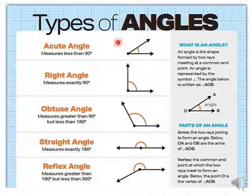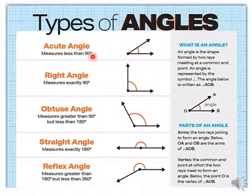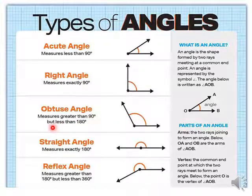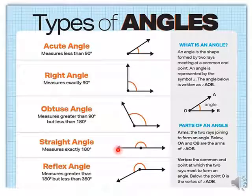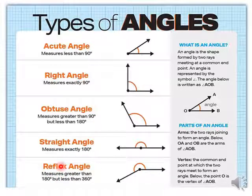The types of angles: we have acute angles, which are smaller than 90 degrees. If it's a right angle, its measure is exactly 90 degrees. If it's greater than 90 and less than 180, it's an obtuse angle. If it's 180 degrees, it's a straight angle — it looks like a straight line. And if it's greater than 180, we call it a reflex angle.